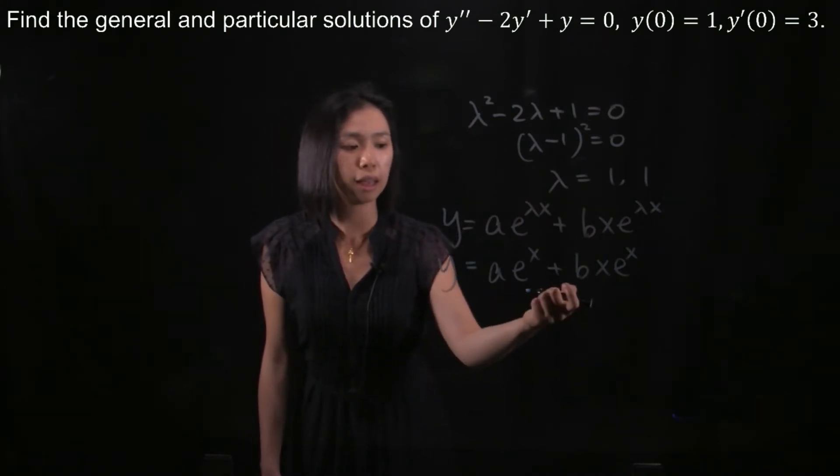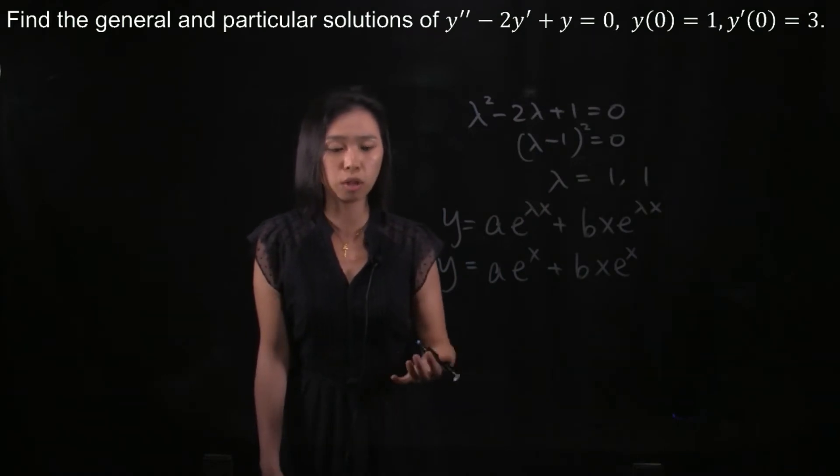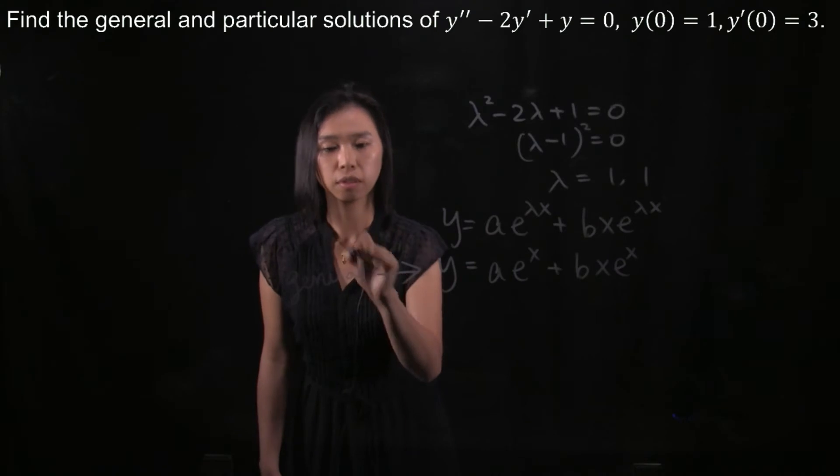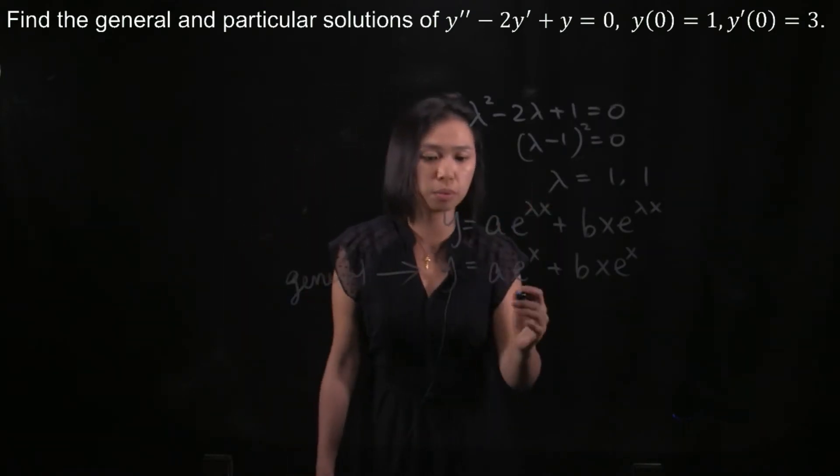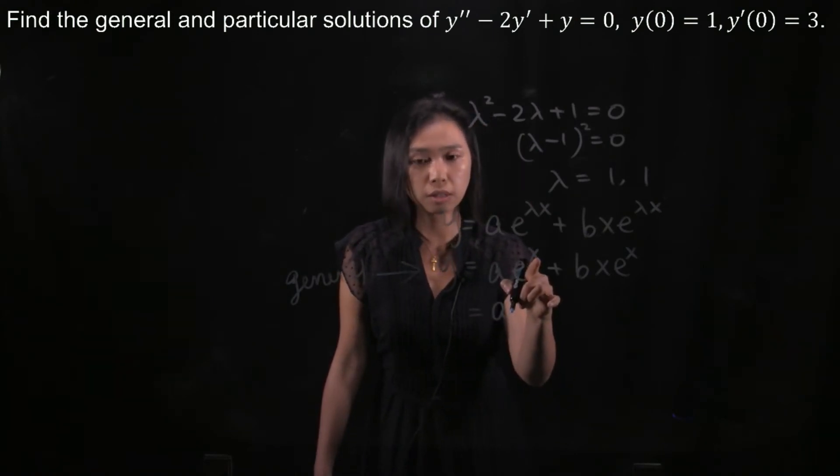So if we want to find a and b, we need to substitute the initial conditions into it. If we do not, then this will be the general solution. But we want to find both. So right now we will substitute x to be 0, and then when x is 0...